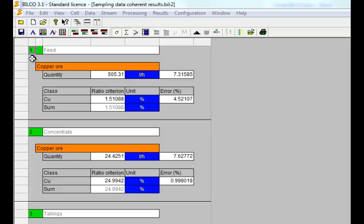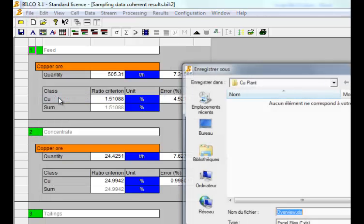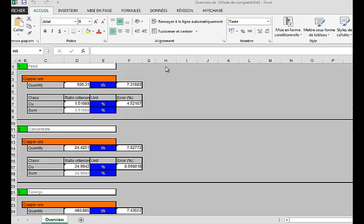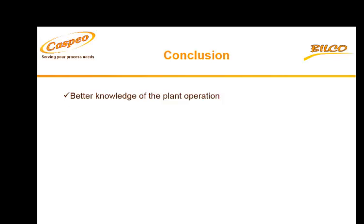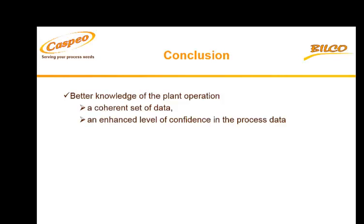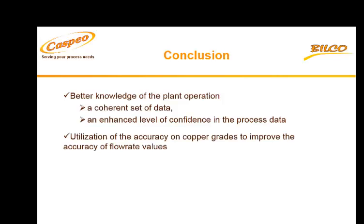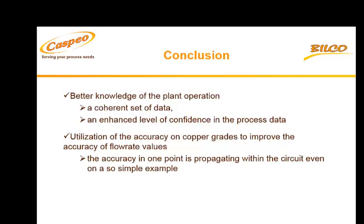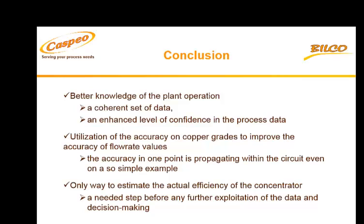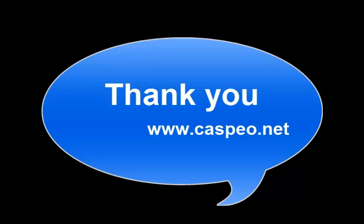All the data in Bilco can easily be exported to Excel. Data reconciliation will ensure a better knowledge of the plant operation, providing a coherent set of data and an enhanced level of confidence in the process data. As shown in this example, the accuracy on copper grades has been used to improve the accuracy of flow rate values. With data reconciliation, the accuracy in one point is propagating within the circuit. In conclusion, data reconciliation is the only way to estimate the actual efficiency of the concentrator. It is a decisive step before any further exploitation of the data and decision making. Don't hesitate to contact Caspio for more information.